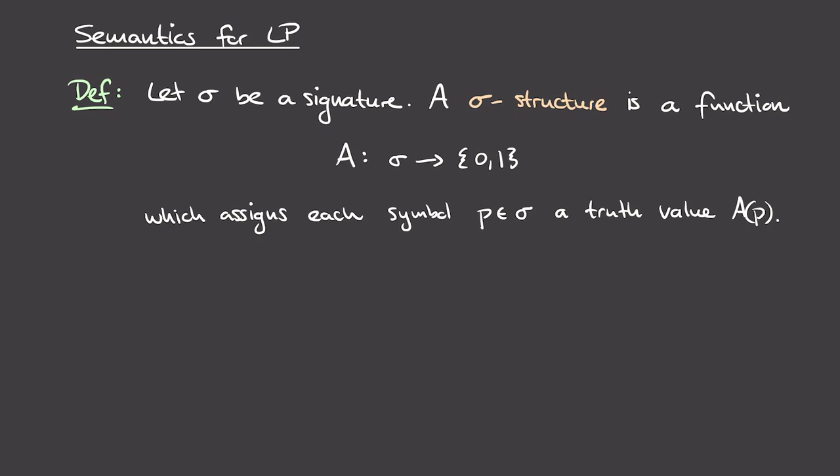The first definition we'll need is that of a sigma structure. We let sigma be a signature — that's just a set of atomic propositions, a set of variables that we build our formulas out of. For each such signature sigma, we define what's called a sigma structure. This is just a function which assigns each element in sigma — so each propositional variable — a truth value in the set {0, 1}. Essentially, we're choosing truth values for each of the symbols in our signature, assigning each atomic proposition a definitive truth value. A sigma structure A is like a situation as it pertains in the world, where each of the atomic propositions has a definitive truth value.